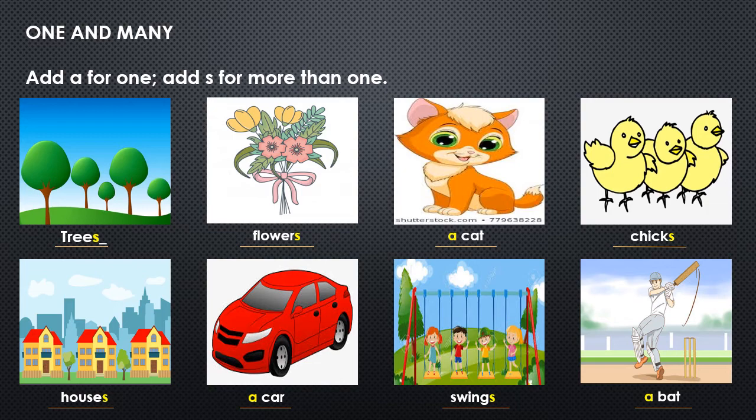The sixth image shows one red car — singular — so you write 'a car.' The seventh image shows kids playing on swings — there are four swings — which is plural, so you add 's' and it becomes 'swings.' The last image shows one boy playing cricket with one bat in his hand. You don't play cricket with two or three bats — it's singular — so it becomes 'a bat.'